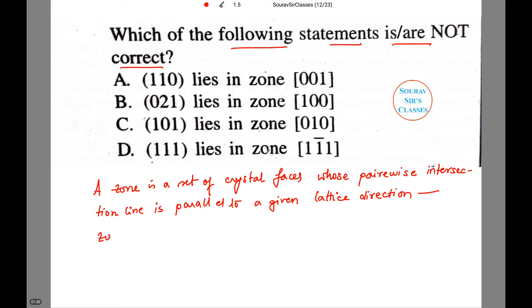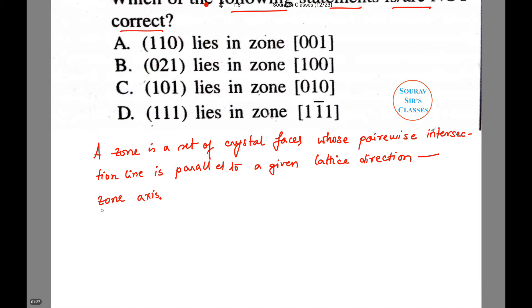This is called the zone axis. A zone axis is a lattice row parallel to the intersection of two or more families of lattice planes.